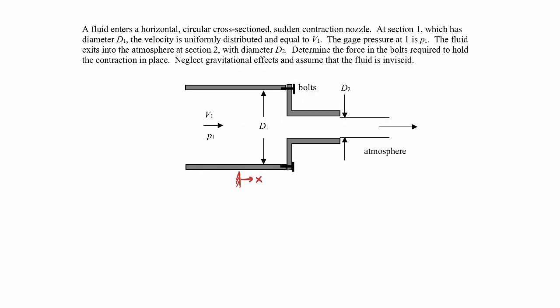As for the control volume, I'll choose one that cuts across the incoming stream v1 at right angles, then cuts across the outgoing stream at right angles, and goes along the surface of the pipe. Importantly, I'll have the control volume cut through the bolts, so I capture the force that one half of the bolt exerts on the other half acting on the control volume. I'll call all of these bolt forces just 'force bolts.'